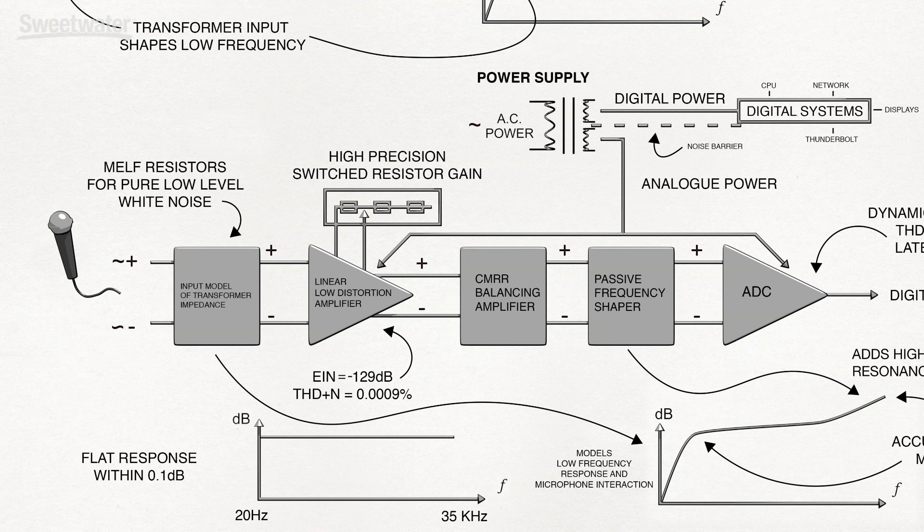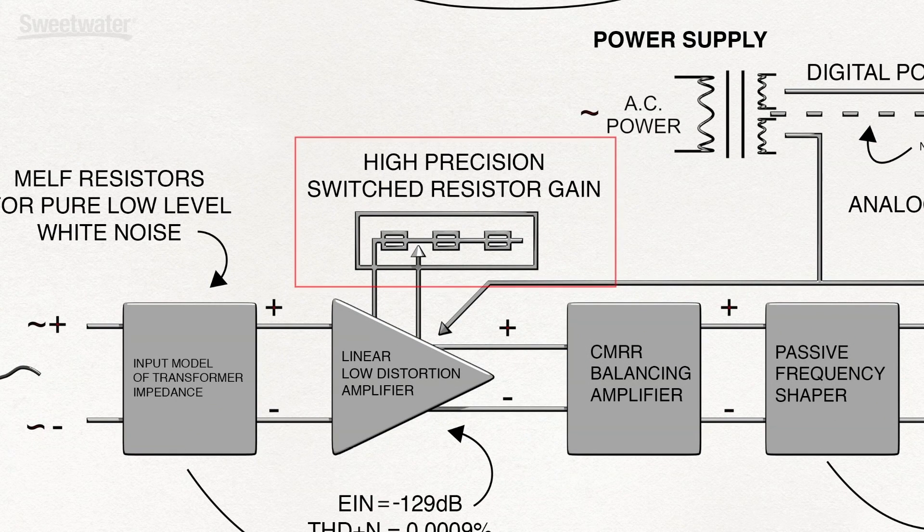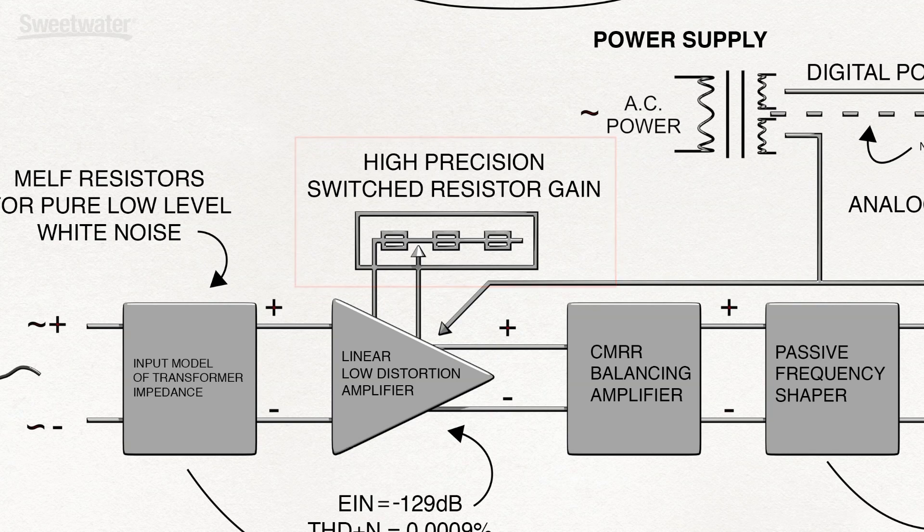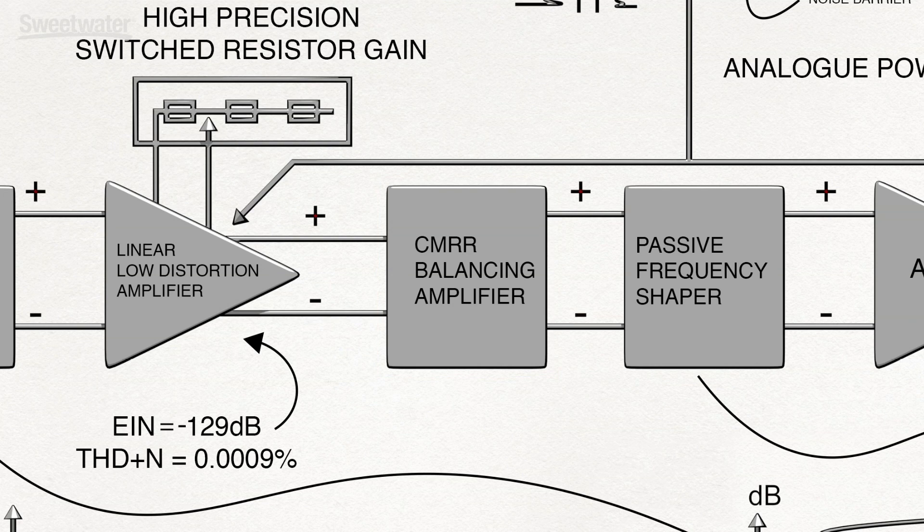However, for the Red Evolution Mic Pre, we went a whole lot further into refining the performance, adding a linear switched precision resistor network with remote control gain in smaller 1 dB steps, allowing accurate recall and channel matching for stereo recording. A high precision balancing amp to increase common mode rejection ratio and maximize signal to noise ratio.